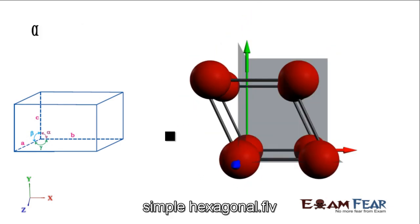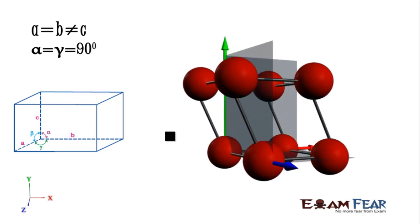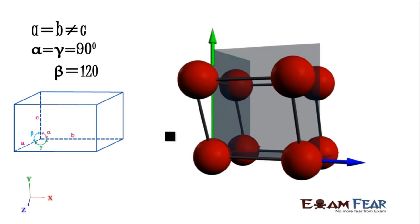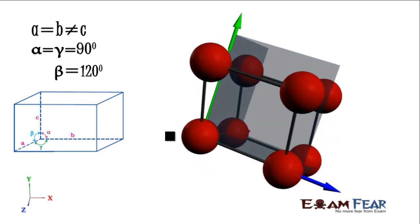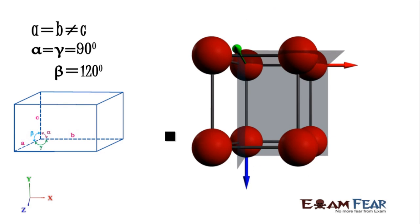The next is hexagonal. In hexagonal, A is equal to B but not equal to C. Two sides are equal and two angles are equal: alpha is equal to gamma, which is equal to 90 degrees, and beta is equal to 120 degrees. We have two sides equal, one side unequal. In hexagonal, we have only simple packing.